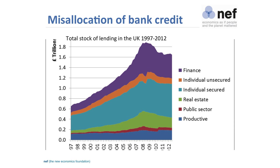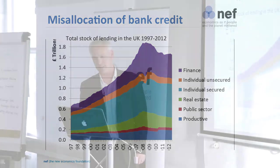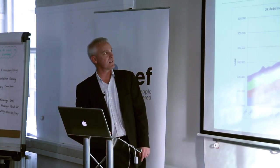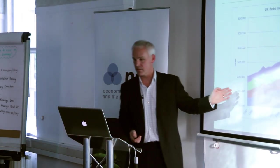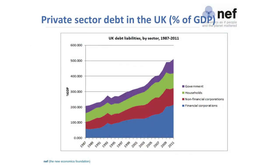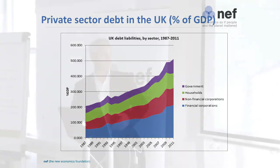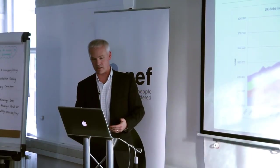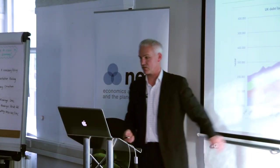The big movers were commercial property speculation and financial lending between the financial sector. What that's led to is an enormously higher stock of total debt. It's not necessarily government debt that is the worry — many would argue it's not a worry at all at current levels. But private debt — households and firms — as a ratio to GDP has built up to really quite high levels by historic standards, and interbank lending has also grown.